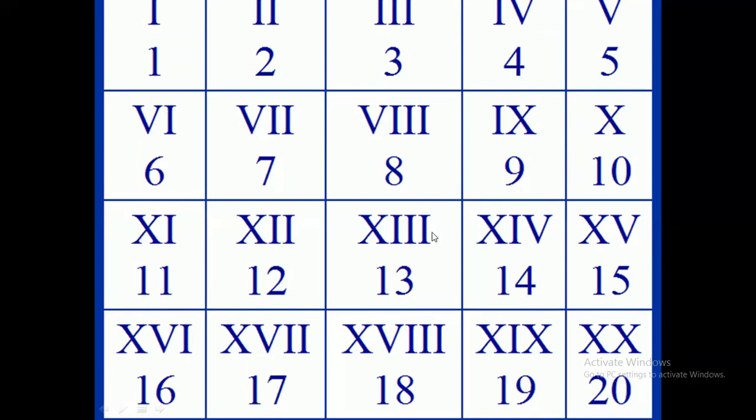But now don't repeat this again because maximum 3 times you can repeat it. Now after 13, you have 14, so 10 plus 4. 4 is IV. 10 plus 5 is 15. V is for 5, so 10 plus 5 is 15. 10 plus 6 is 16. This is the 6, VI is 6. This is 7 here. This is 8 here with 10. 9 here with 10. And now 20 means 2 times X and X, 10 plus 10 is 20.